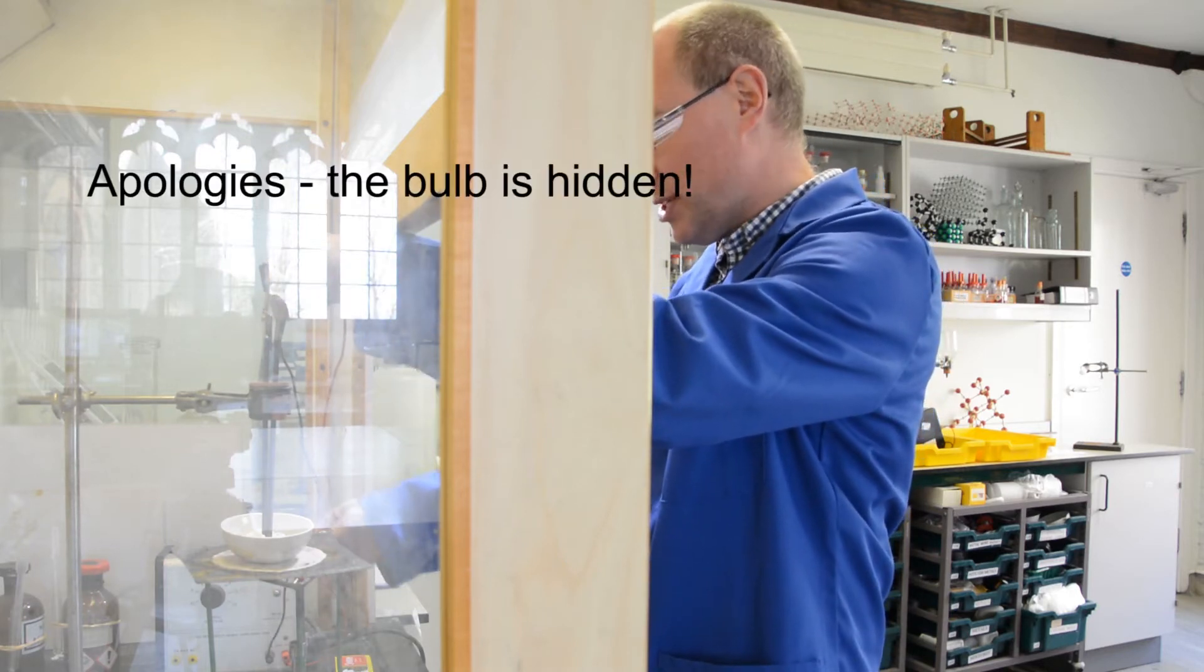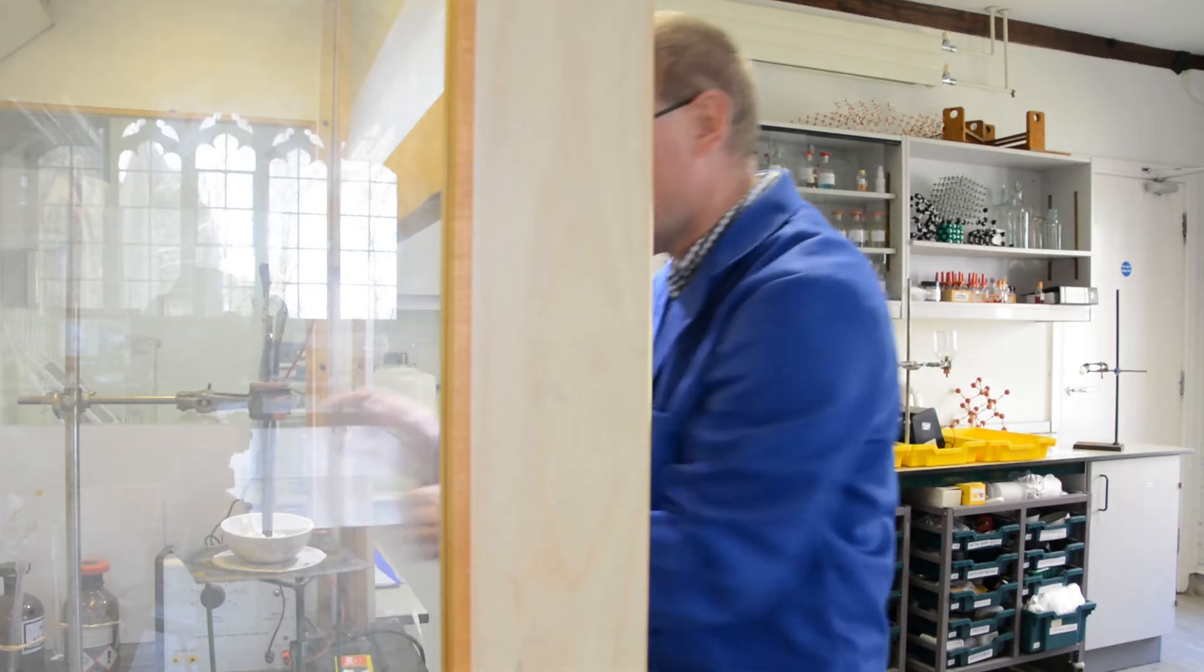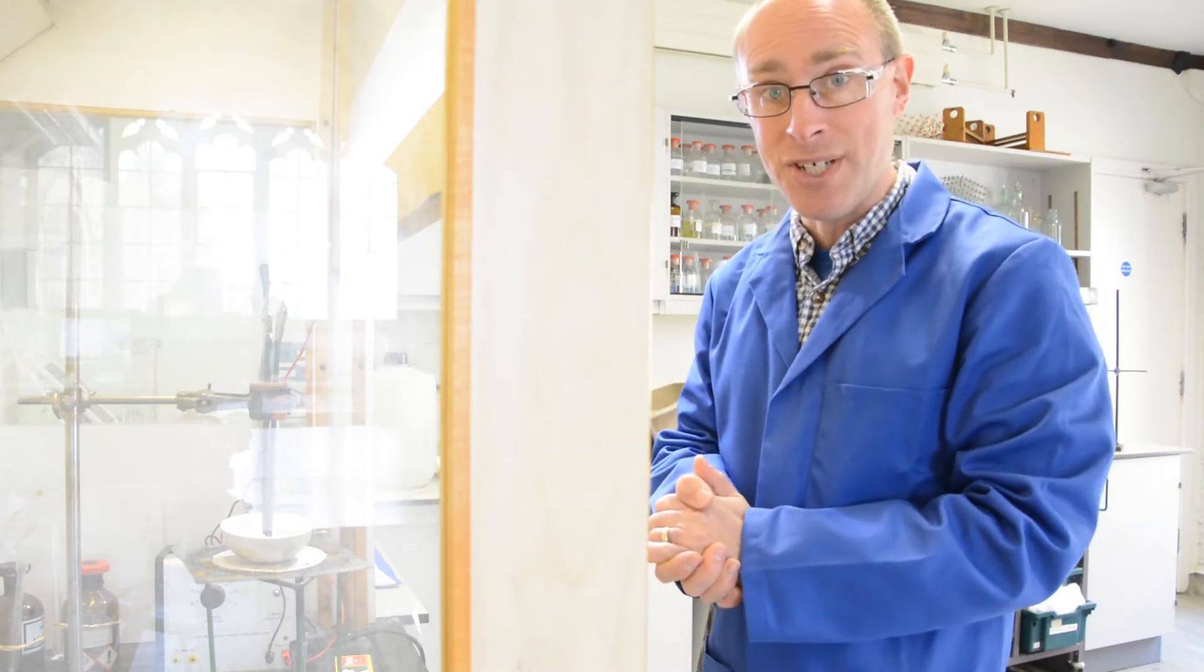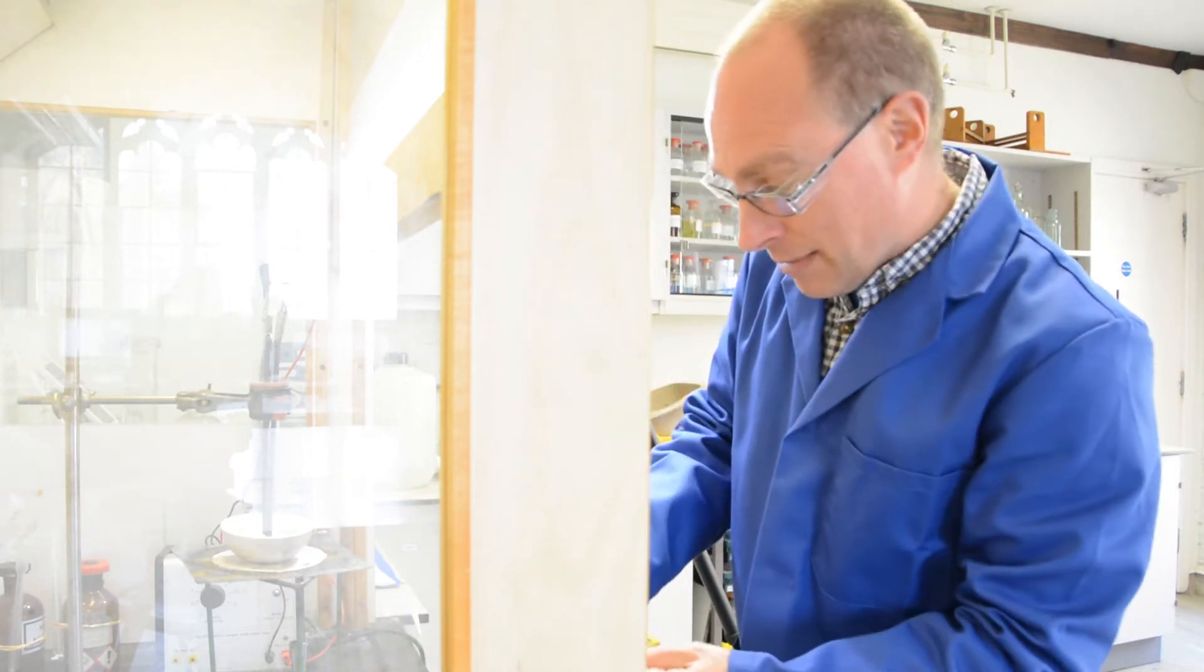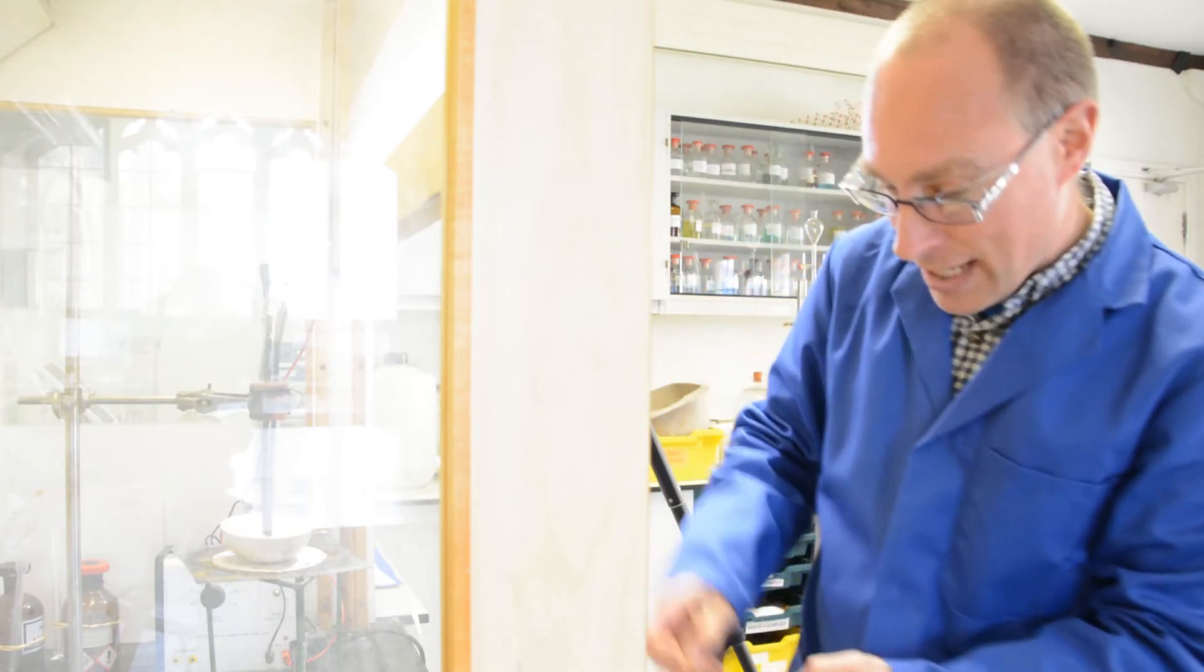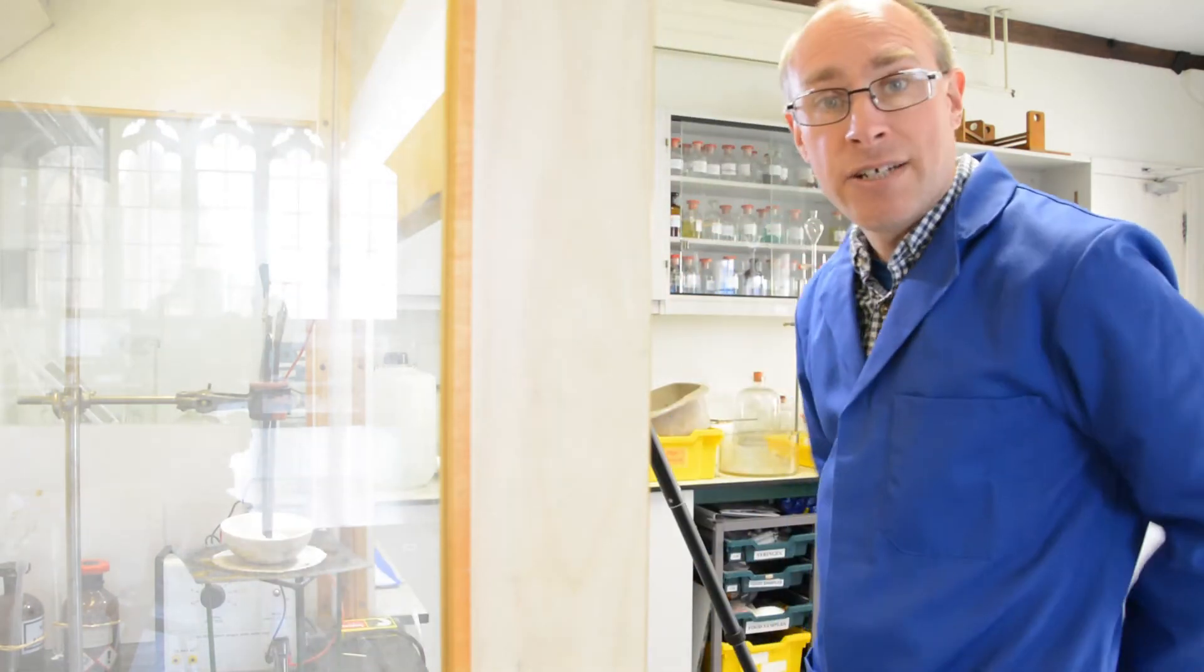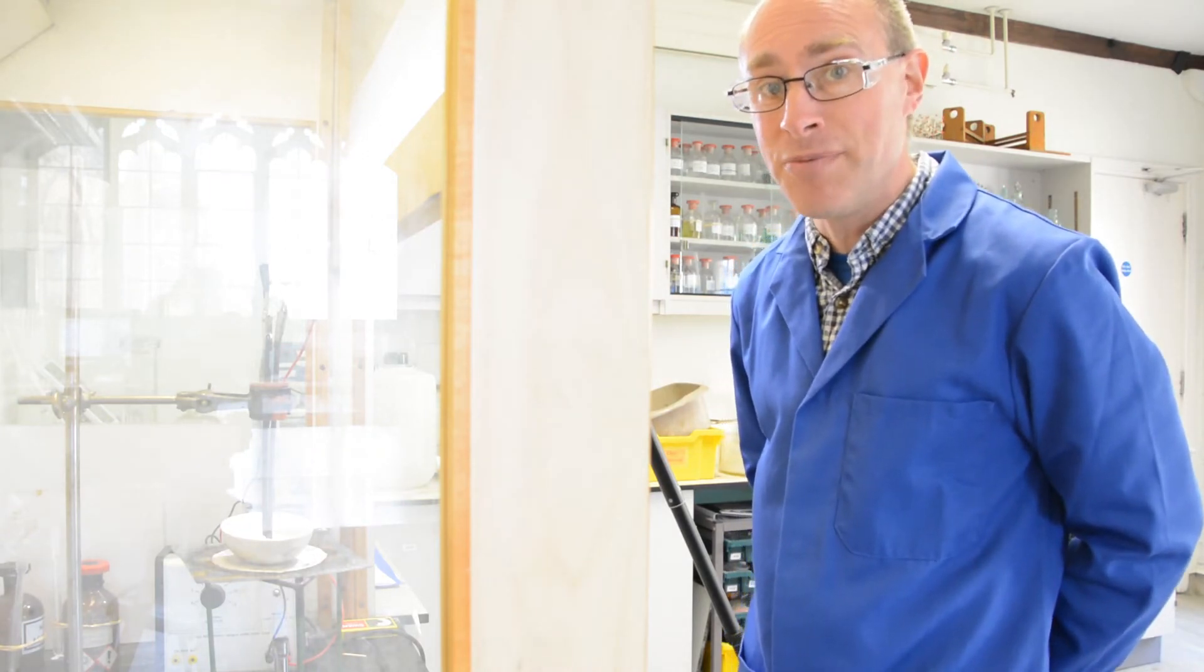So at the moment there's no current flowing because the lead bromide is solid, and because it's solid the ions are fixed in position and cannot change places. So I'm going to light the Bunsen burner and start to melt that lead bromide, heat that up strongly. That will take a few minutes to melt completely.